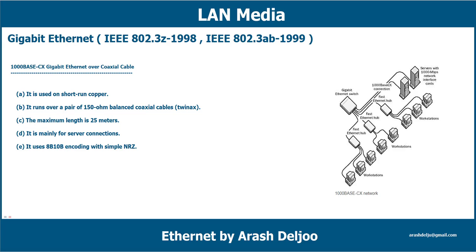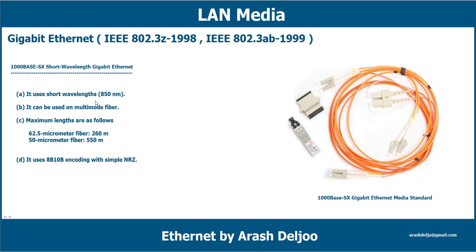The next standard is 1000Base-SX, which stands for short wavelength gigabit ethernet. It is a type of standard for implementing gigabit ethernet networks. The SX stands for short, indicating that this version is intended for use with short wavelength transmissions over short cable runs of fiber optic cabling.